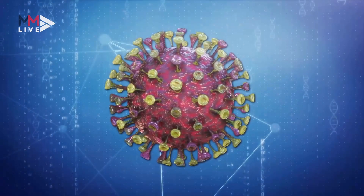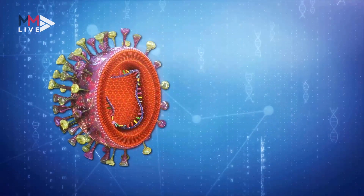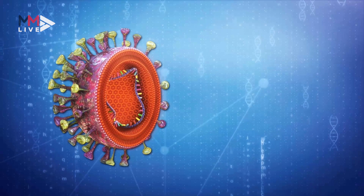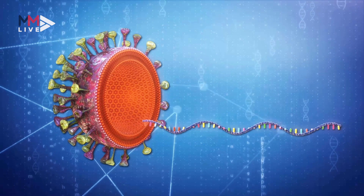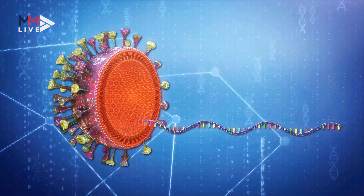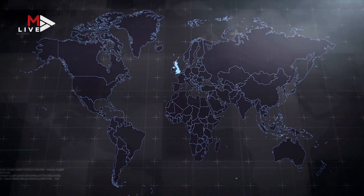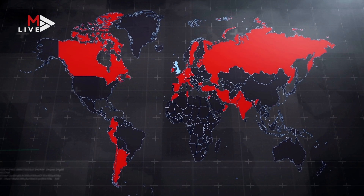In the case of the 501Y.V2 variant, it was first found in an individual who was in the Eastern Cape. It's unfortunate that it's sometimes referred to as the South African variant, because it's actually now in 15 countries throughout the world. It is not appropriate to refer to it geographically. The temptation is there to do that, but it's best to call it by what it is — its name.